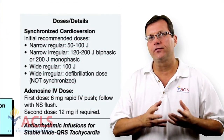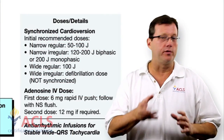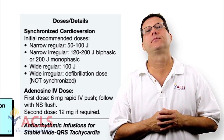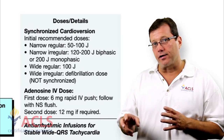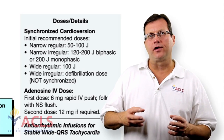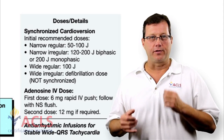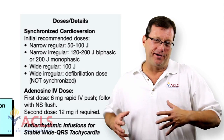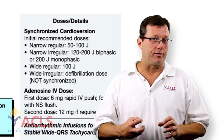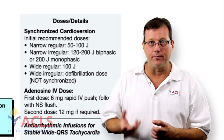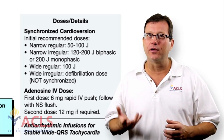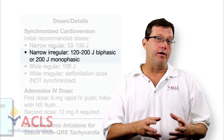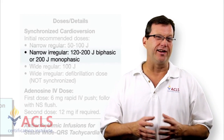There is a little difference in the amount of energy recommended between regular and irregular narrow-complex tachycardias. For a narrow-complex regular tachycardia, the literature suggests starting around 50 joules — synchronized cardioversion at 50 joules. If the narrow-complex tachycardia is irregular, like AFib with RVR, they recommend bumping the joules up to about 200 joules. So AFib with RVR: synchronized cardioversion at 200 joules.